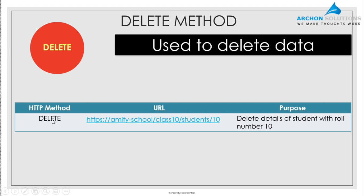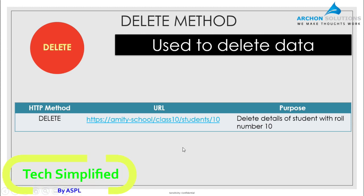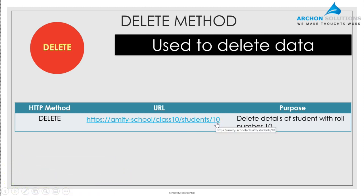The final and very obvious method is DELETE, used for deleting data. If we need to remove a record from the database, we set the HTTP method as DELETE and use the URL: https://amityschool/class10/students/10. The back-end looks at the HTTP method, understands the DELETE operation, and deletes the student of class 10 with roll number 10. If the '/10' had not been included, it would have deleted all students under class 10 — this depends on the logic written behind the scenes.